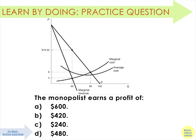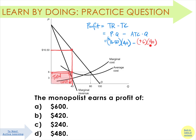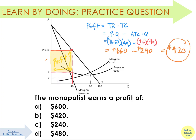One more thing: what is the profit? Using the same set of graphs, the monopolist earns a profit of — is it A: $600, B: $420, C: $240, or D: $480? Profit is total revenue minus total cost. Total revenue is $16.50 times 40. Total cost is average total cost times quantity — at Q=40, the ATC is $6, so $6 times 40. The difference between total revenue and total cost is your profit, shown as the yellow box: $420. The answer is B.